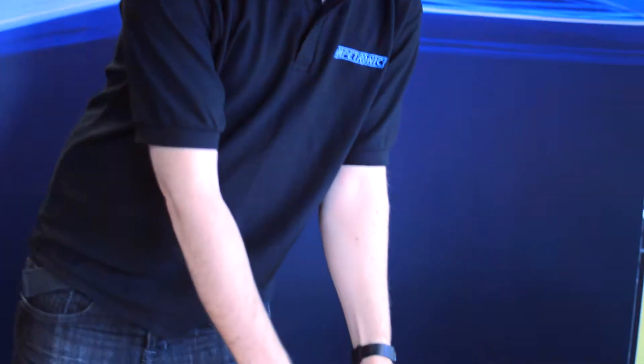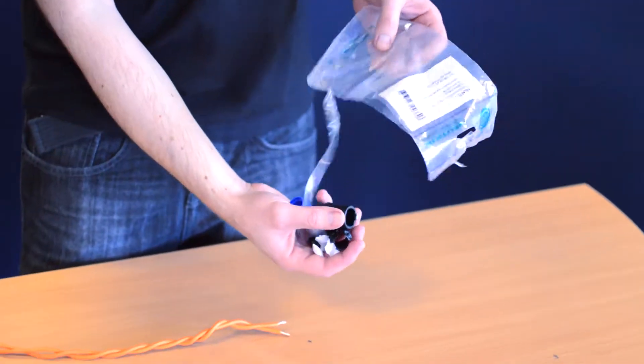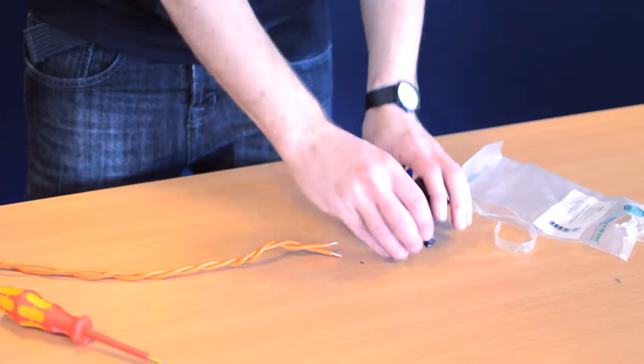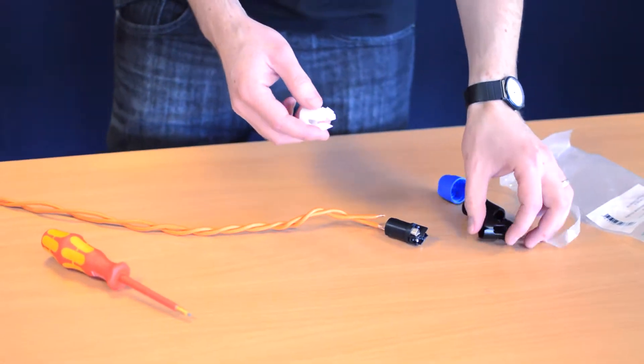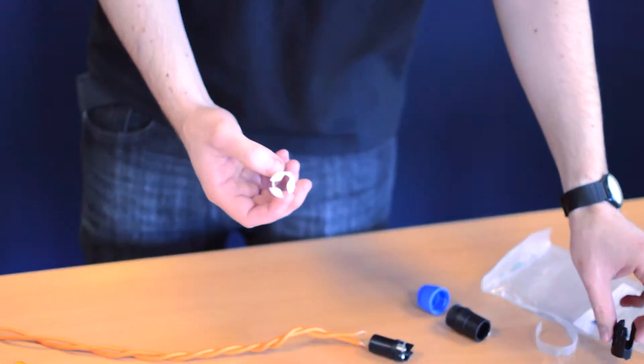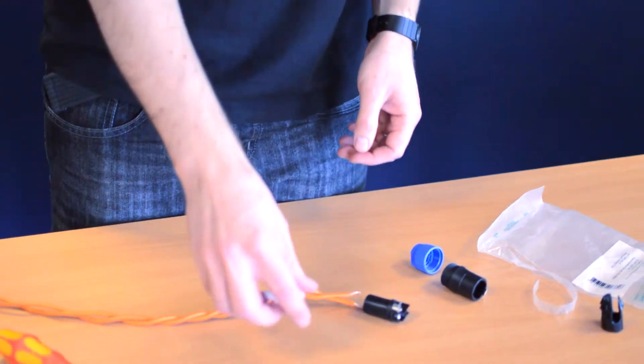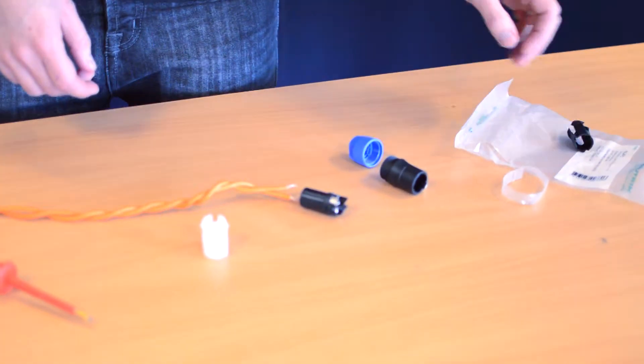So in the pack you'll find five parts. First thing is you've got two different strain reliefs. The white one is for a slightly smaller diameter cable, so that's going to be most suitable for what we're using here. You can discard the black strain relief.